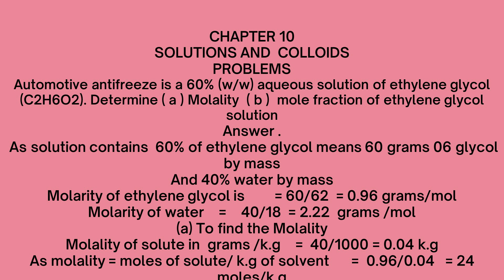Problem number one: a 60% weight by weight aqueous solution of ethylene glycol, which has the formula C2H6O2 — determine its molality and mole fraction of ethylene glycol. A solution contains 60% of ethylene glycol, meaning it has 60 grams of ethylene glycol per 100 grams of the total solution.